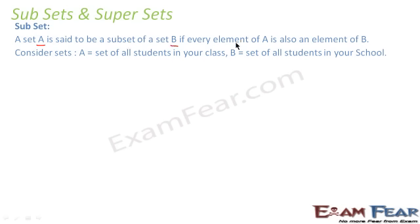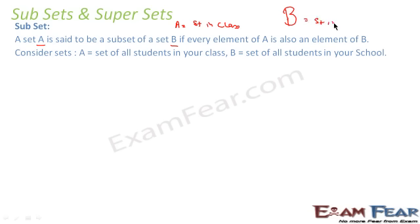A set A is said to be a subset of set B if every element of A is also an element of B. For example, let set A be the students in your class and set B be the students in your school. A is a subset of B because every student in your class is also in your school.